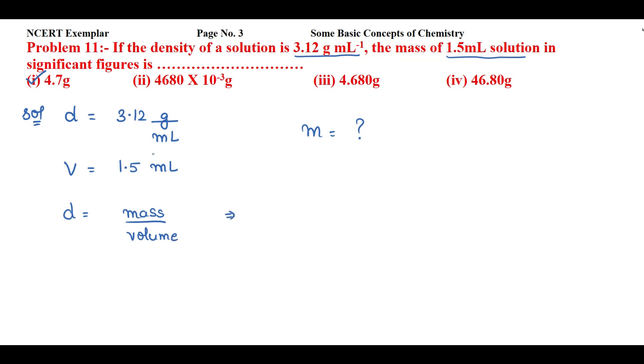So density equals mass upon volume. Now I need to find the mass. For that, I'll cross multiply this volume with density. So mass of the solution will be d into v. Simply put the values: m equals d, that is 3.12 gram per mL; volume, it is 1.5 mL.